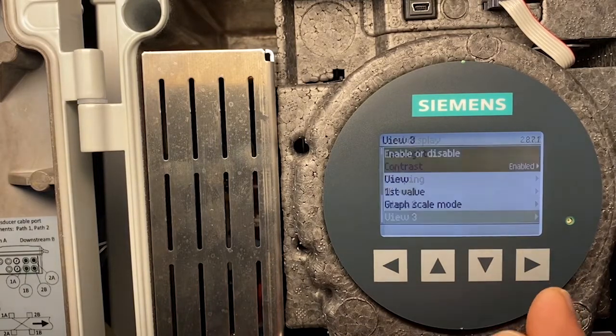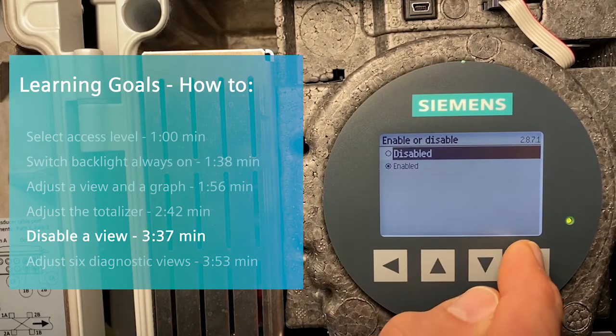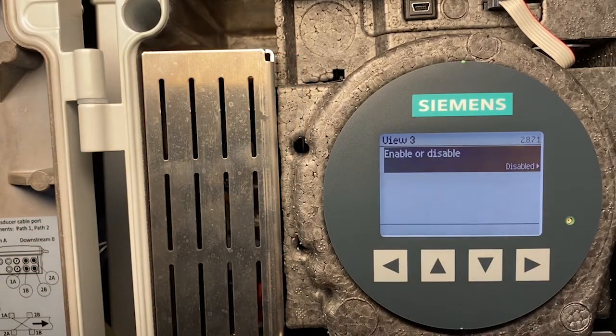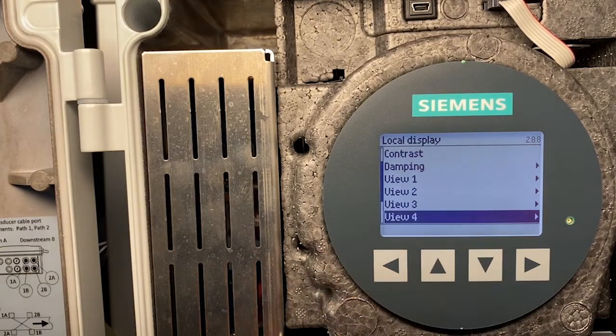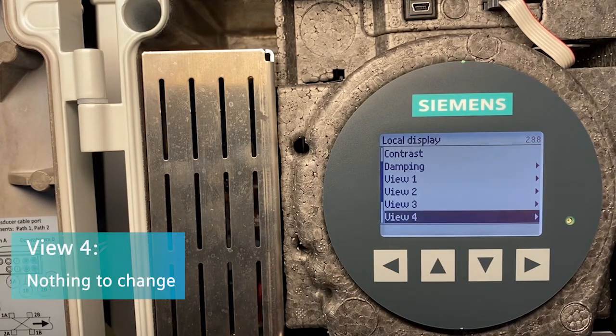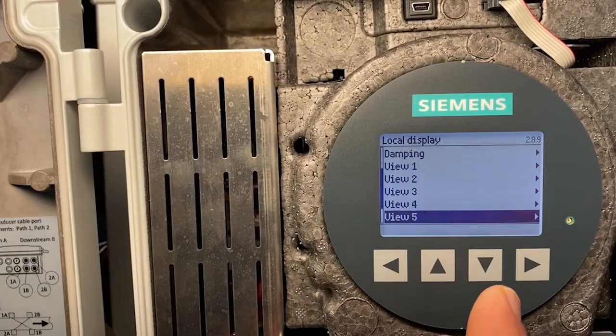I want to disable. View 4, nothing to change. In View 5, I want to adjust the six diagnostic values.